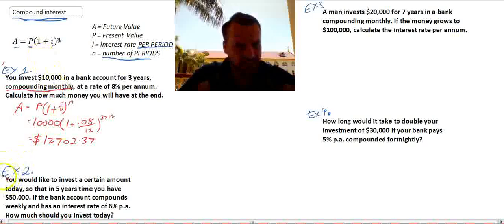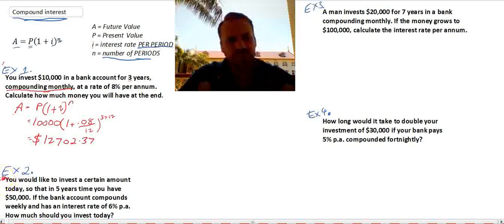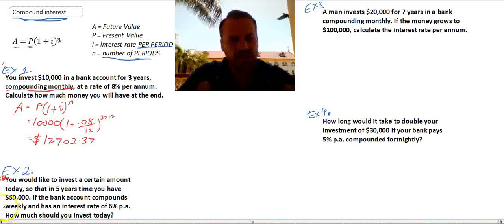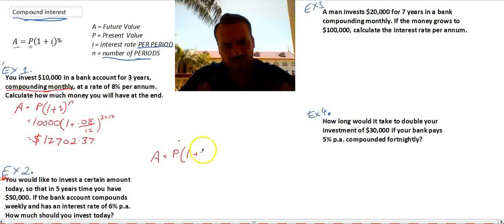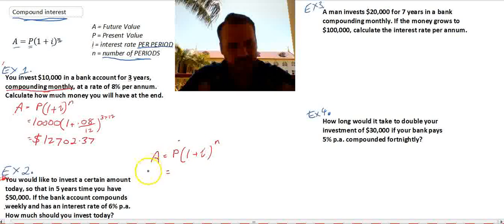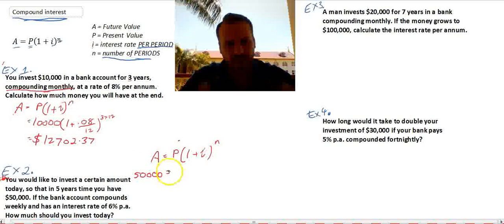Example number two here. You would like to invest a certain amount today so that in five years' time you have $50,000. If the bank account compounds weekly and has an interest rate of 6% per annum, how much should you invest today? So our formula is still the same. A equals P bracket 1 plus I to the power of N. But our difference here is that we know A. We want to have $50,000 in the future. That's our future value. We don't know what P is.